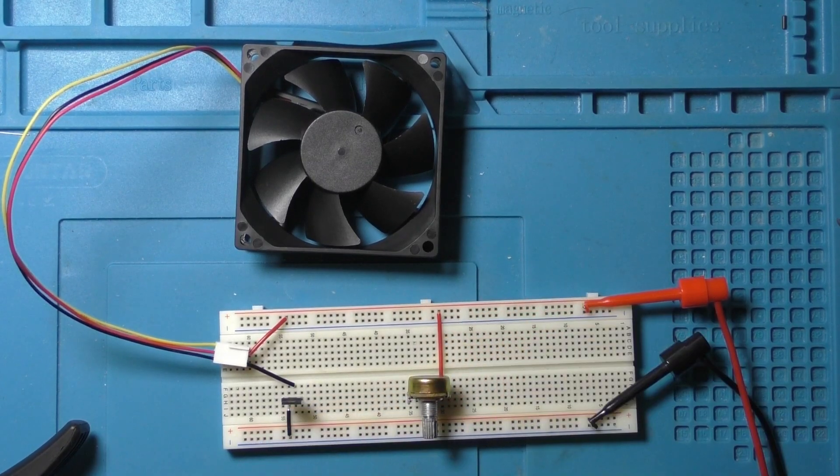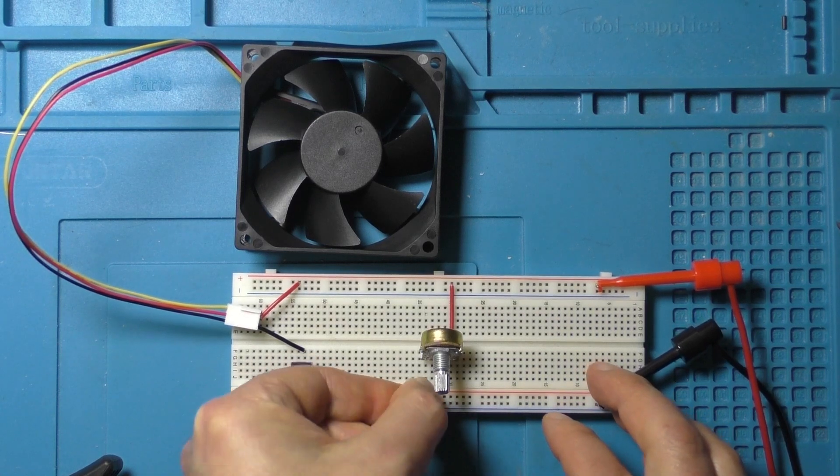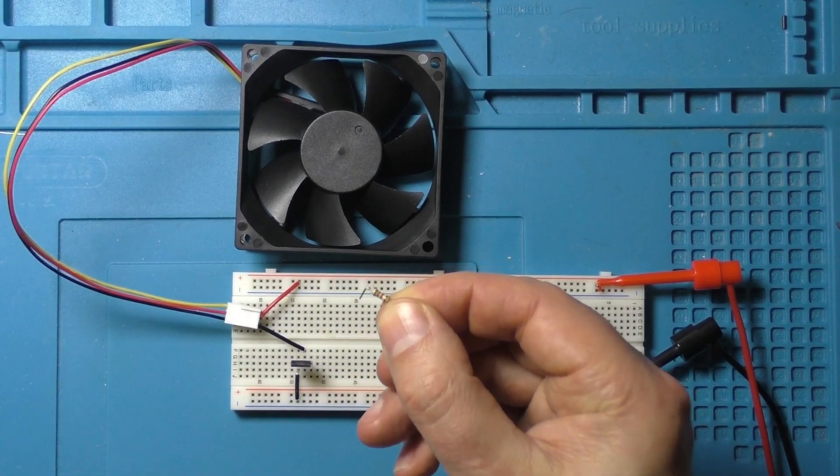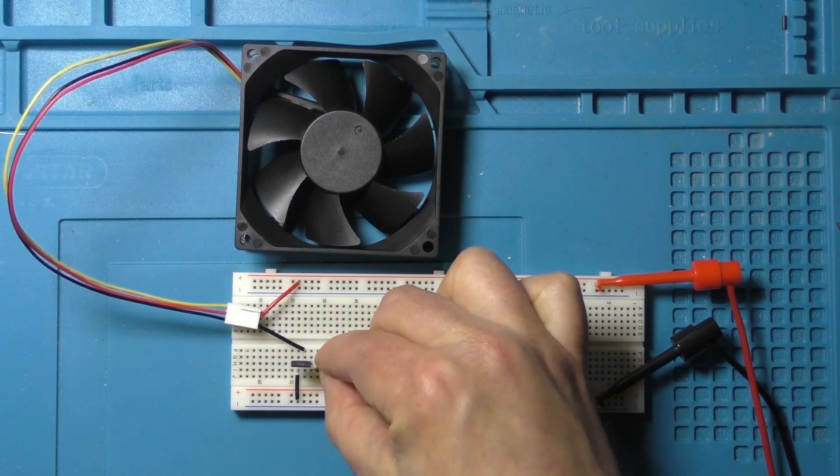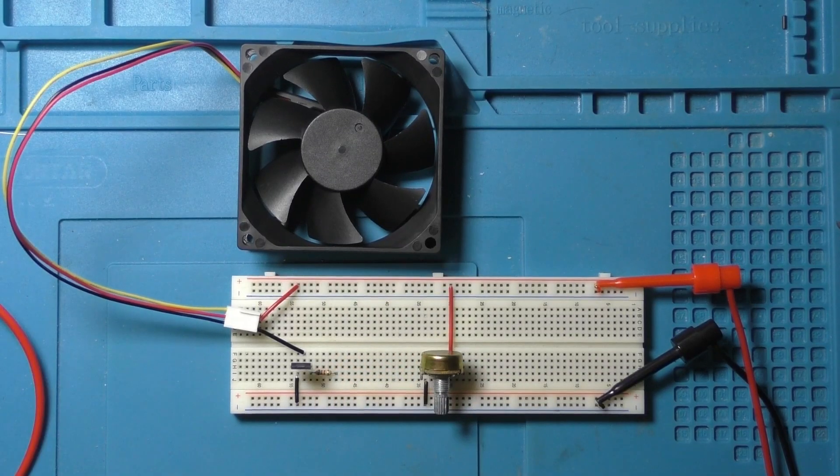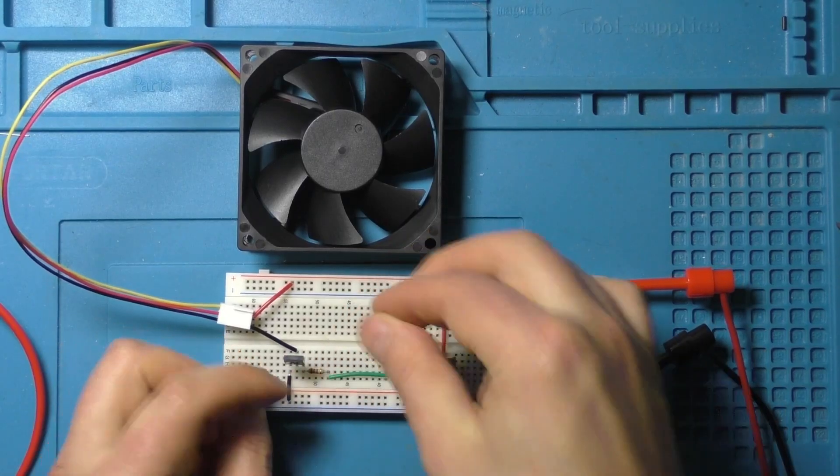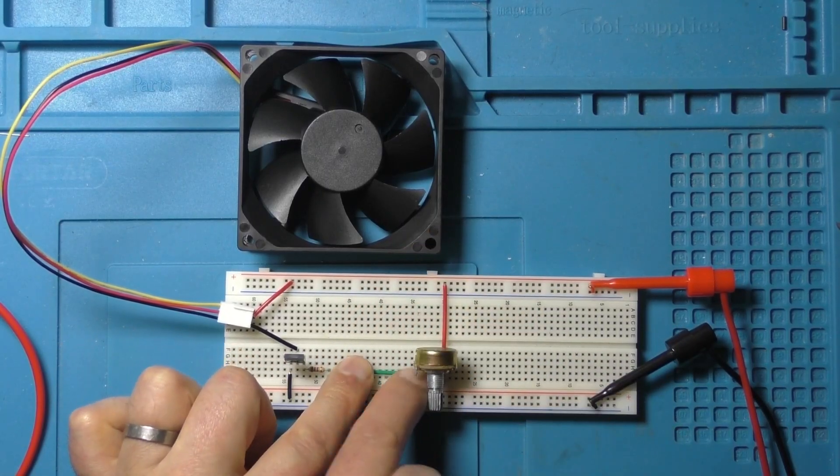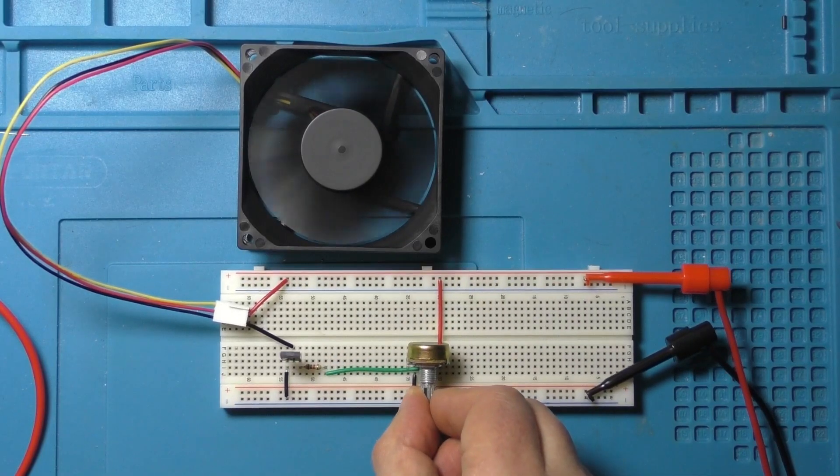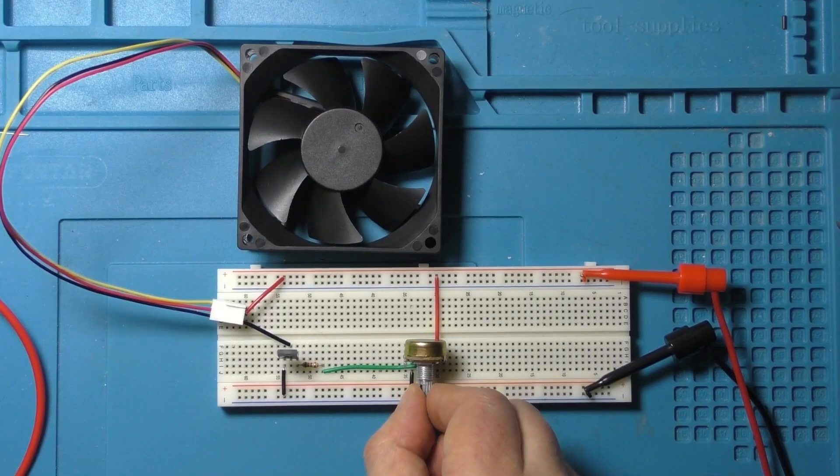Here I'm setting up the potentiometer connecting the two outer pins to the positive rail and the ground rail. And now I'm going to connect the middle pin of the potentiometer via the 1k resistor to the base of the transistor and trying it out.